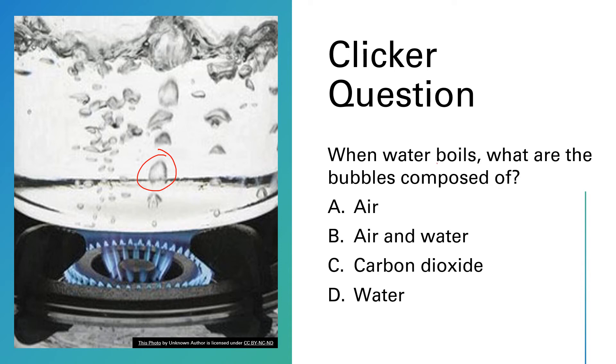So these bubbles that form. Well, when boiling takes place, a liquid is turning into a gas, and it's the same chemical all of the way. So when we're talking about boiling, we're talking about H2O in the liquid phase turning into H2O in the gas phase. It's a physical change. The identity of the substance remains the same. And so those bubbles that you see there are composed of water. So the best answer here is D, water.